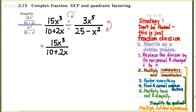So when I flip that second fraction, it becomes 25 minus x squared over 3x to the fifth. And we trade division for multiplication. So now we're multiplying these two rational expressions, and we know how to do that.